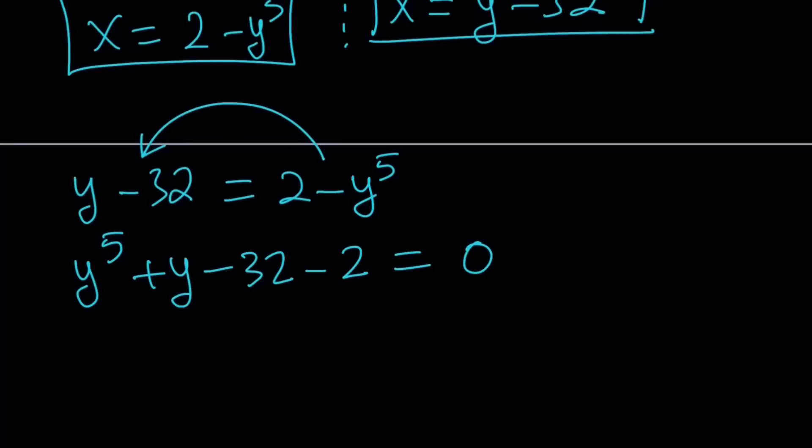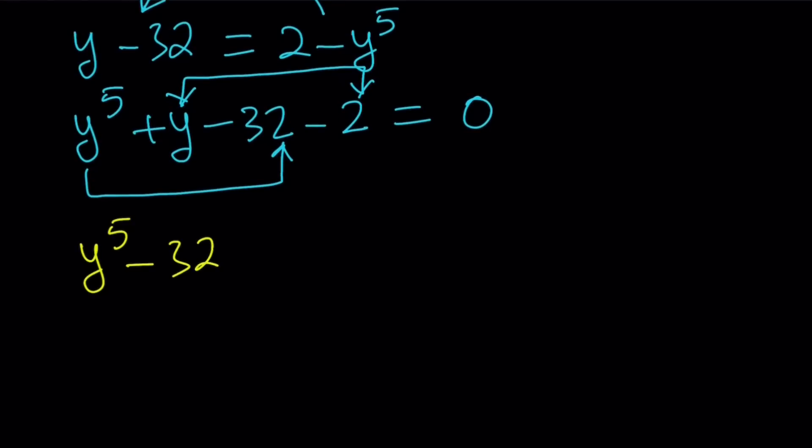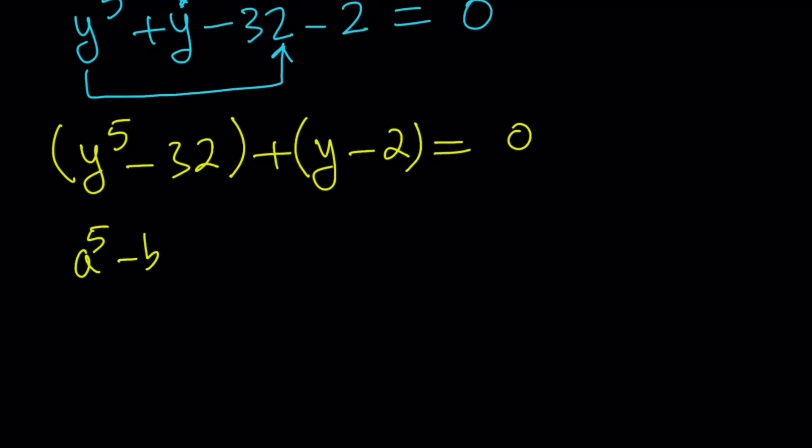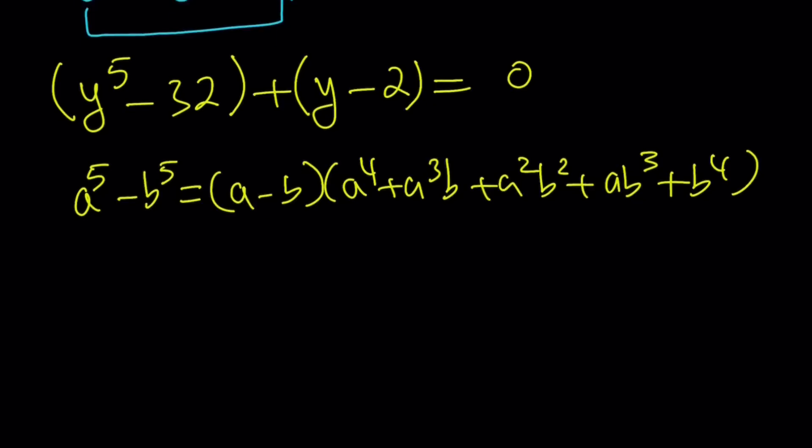Here's what we're going to do. Y to the fifth actually goes well with 32 because 32 is 2 to the fifth power, and y to the fifth is a perfect fifth power. So they fit perfectly. And y minus 2, those two terms are going to go together. So we're going to write it as y to the fifth minus 32 plus y minus 2 equals 0. Now we're going to factor by grouping. Y to the fifth minus 32 is a difference of two fifth powers. So we're going to use a formula like this: a to the fifth minus b to the fifth is divisible by a minus b. And the other factor is going to be a to the fourth plus a cubed b plus a squared b squared plus a b cubed plus b to the fourth power. Pretty much the binomial theorem without the binomial coefficients.